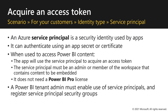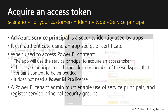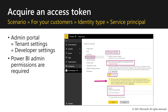Here in the admin portal, under tenant settings and under the developer settings group, a Power BI admin can enable the Service Principal and also specify the security groups that can work with the Service Principal.